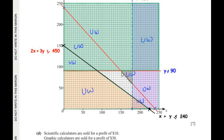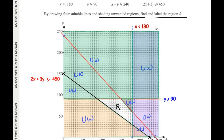Now that all four lines are drawn and unwanted regions are shaded, the remaining unshaded area is our wanted region. We label this region R.